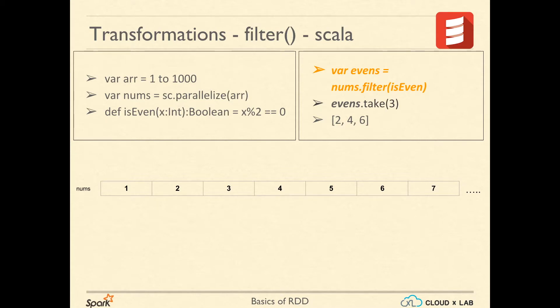For example, nums dot filter bracket is even bracket closed. Here, filter basically calls the function on every element of the RDD. If the function returns true, the element is kept otherwise it is discarded.